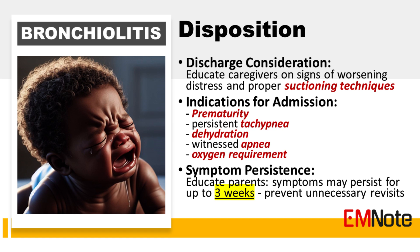Indications for admission include prematurity, persistent tachypnea, dehydration, witnessed apnea, and oxygen desaturation with SpO2 below 90%. Remember to educate parents about the potential persistence of symptoms for up to 3 weeks to prevent unnecessary returns to the emergency department due to persisting mild symptoms.